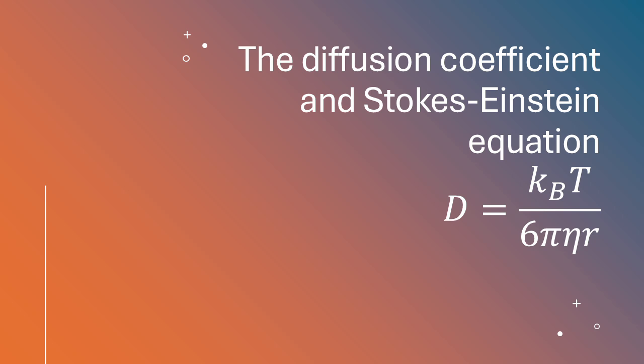The Stokes-Einstein equation is particularly useful when we're dealing with spherical particles diffusing in a fluid. It brings together a bunch of different factors: the size of the particle, the temperature, the viscosity of that fluid. So we're assuming that these particles are perfectly round. Yes. For this equation to work accurately, that's one of the underlying assumptions. Let's break down what the equation actually tells us.